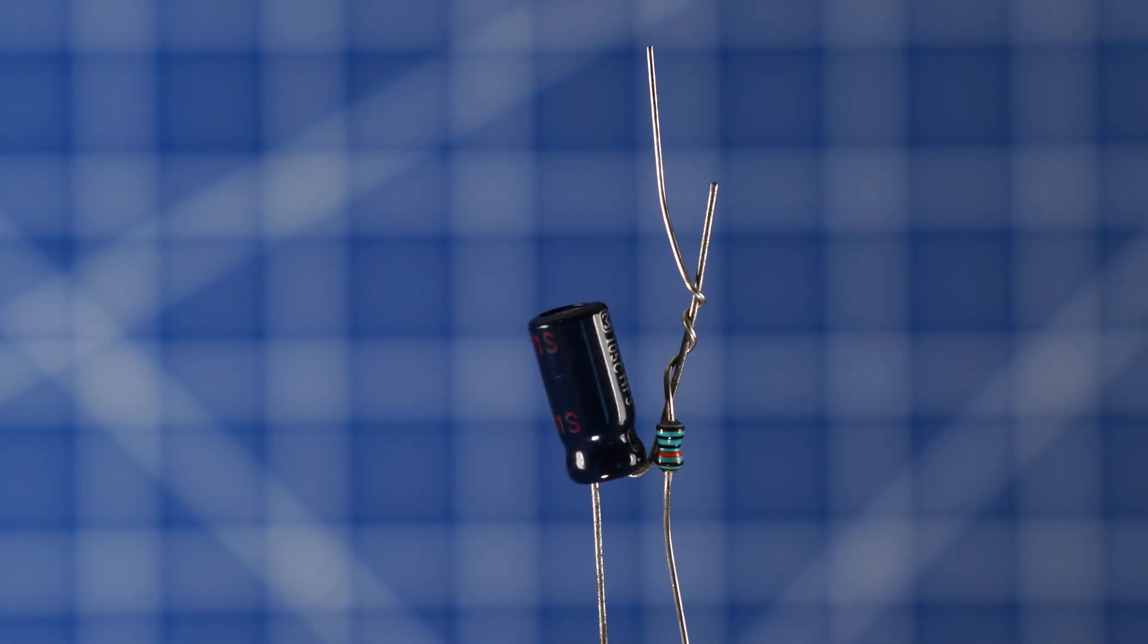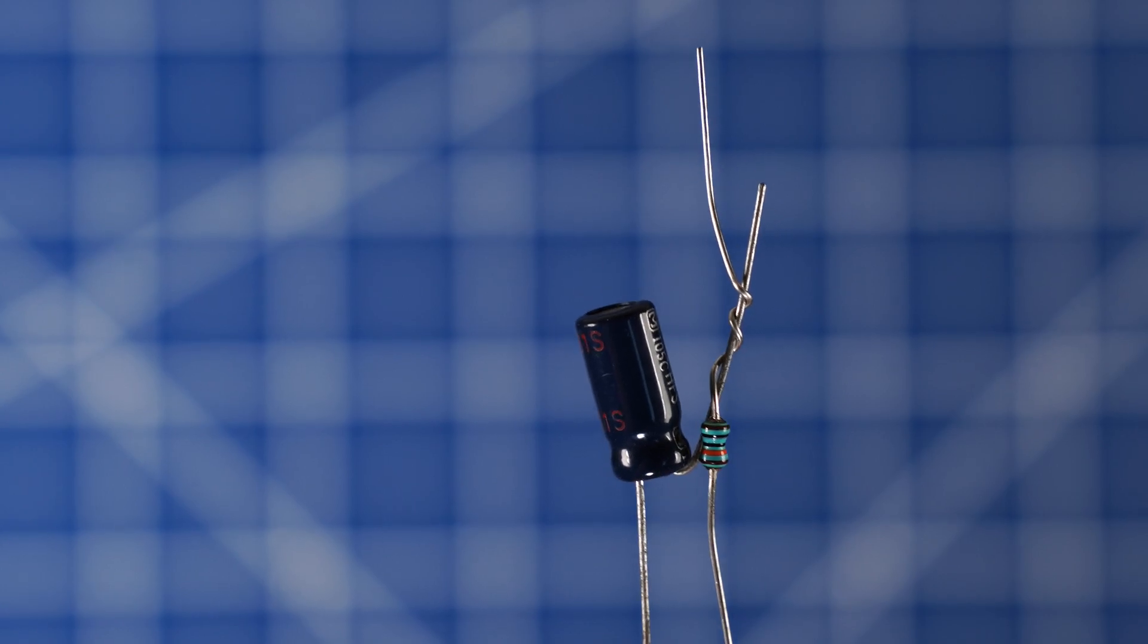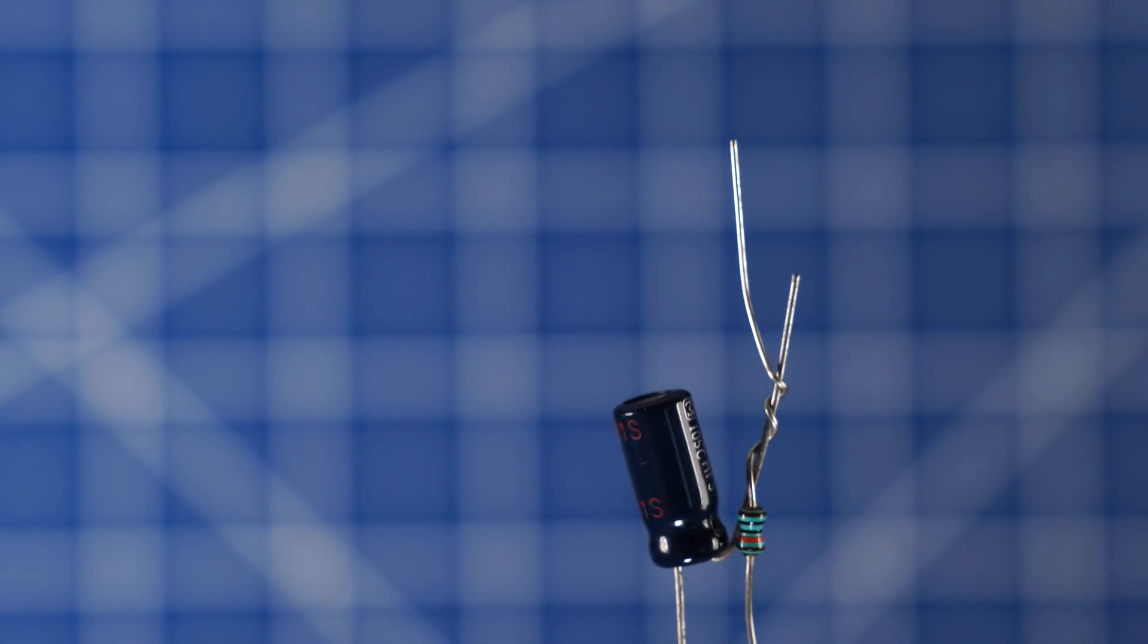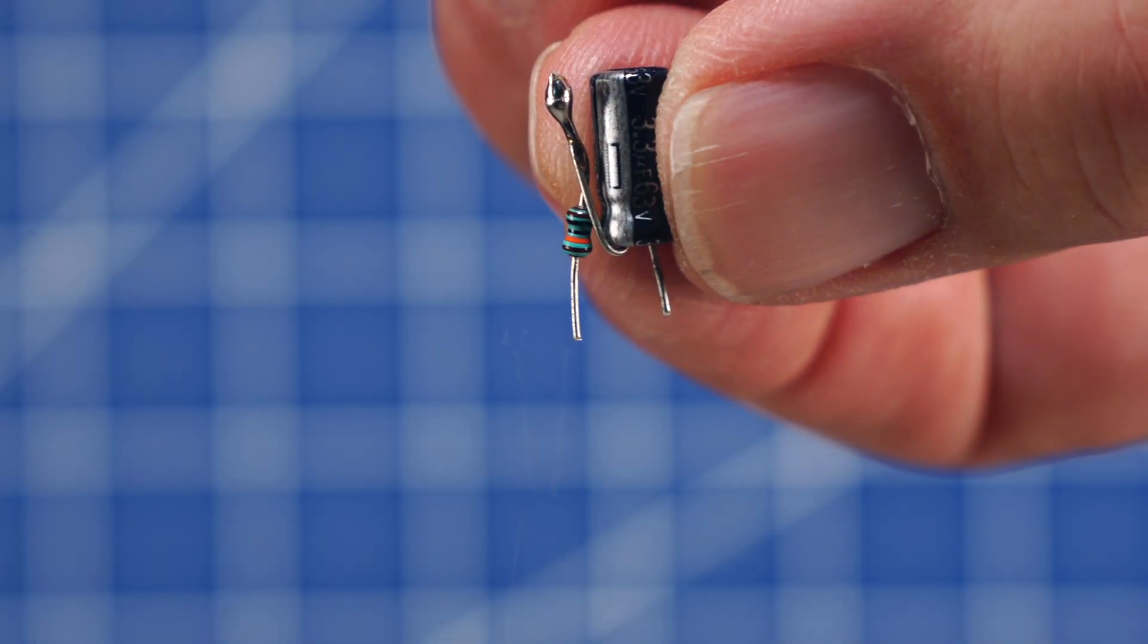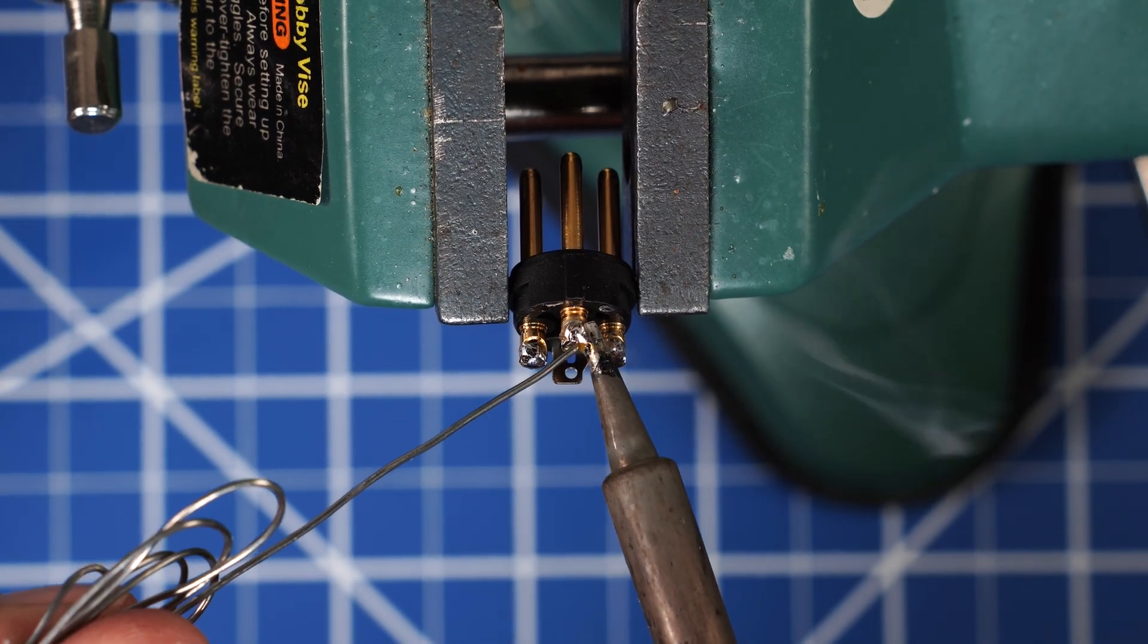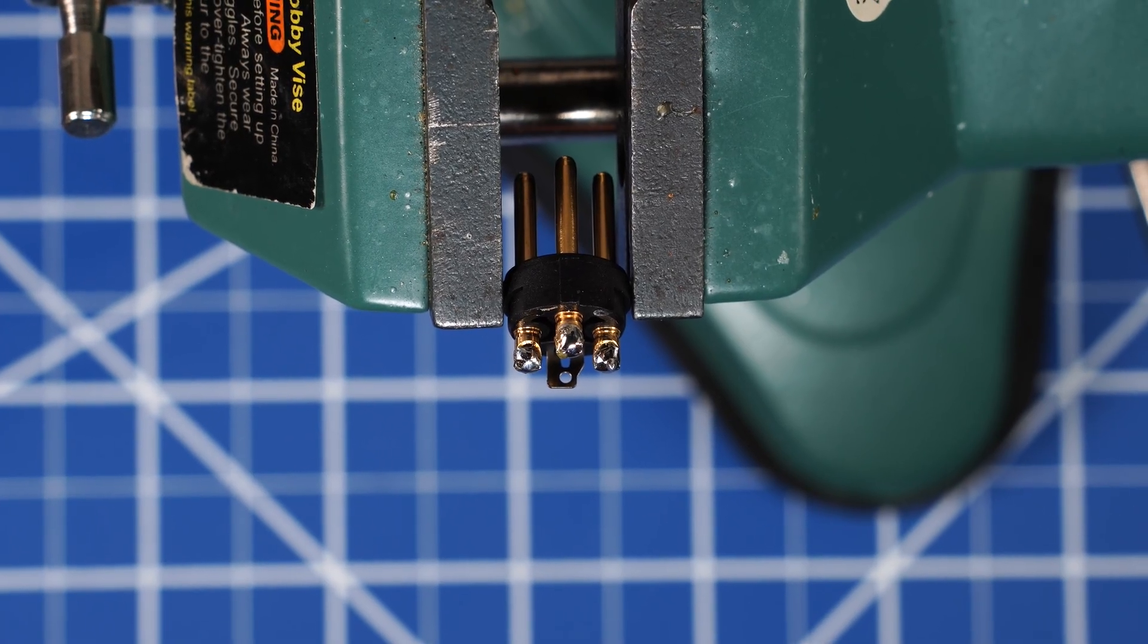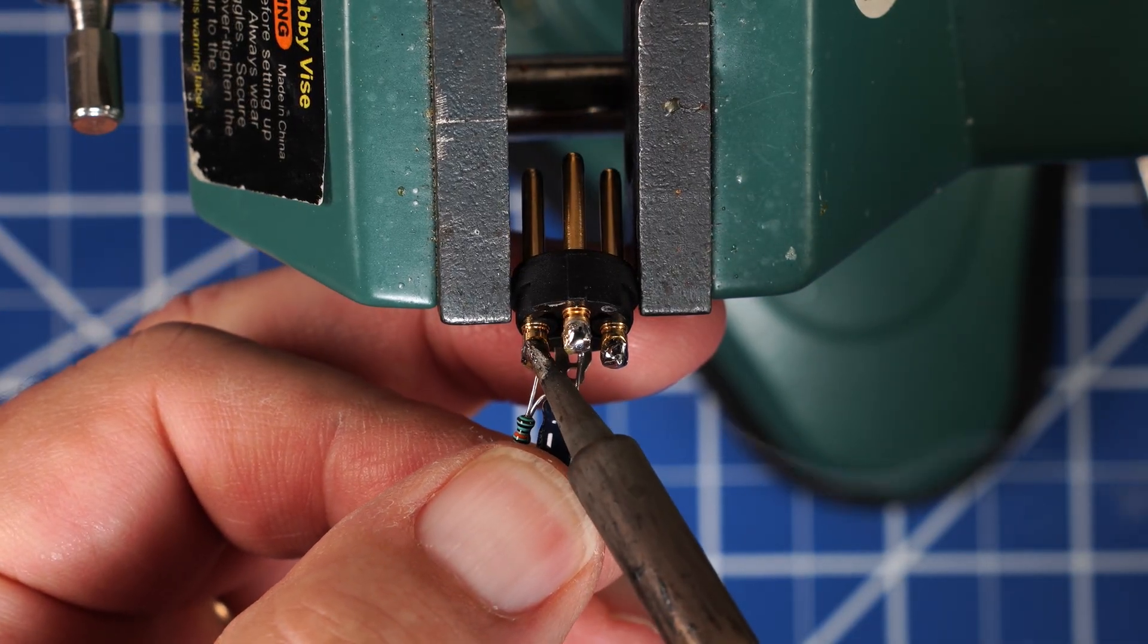Take one of the 3.3 microfarad capacitors and bend the negative lead upward past the capacitor body. Twist that to one side of the 100K ohm resistor. Solder those together and trim it back about the same length as the capacitor. Trim the plus lead of the capacitor and the other lead of the resistor to about a quarter inch long.